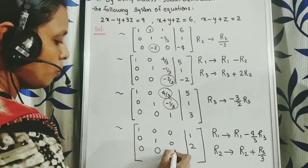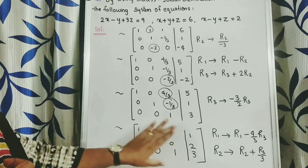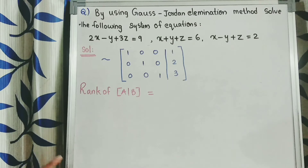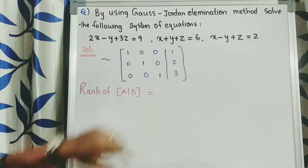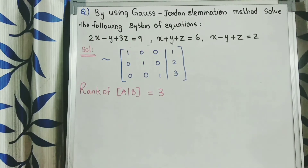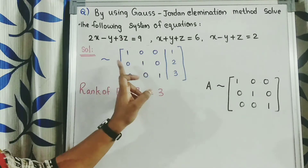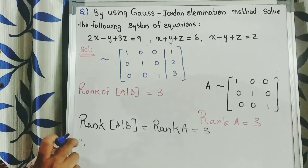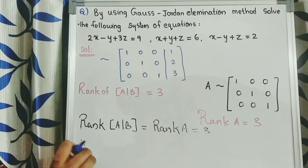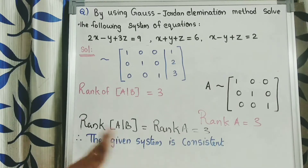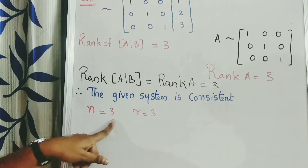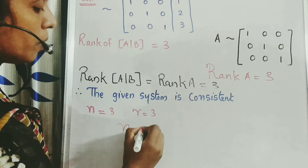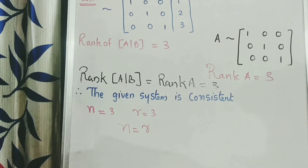The matrix is now converted into a diagonal matrix with diagonal elements 1, 1, 1. The rank of the augmented matrix equals the number of non-zero rows, which is 3. The transformed A is the identity matrix 1, 0, 0; 0, 1, 0; 0, 0, 1. Since rank of the augmented matrix equals rank of A equals 3, the given system of equations is consistent. Since n equals r equals 3, the system has a unique solution.